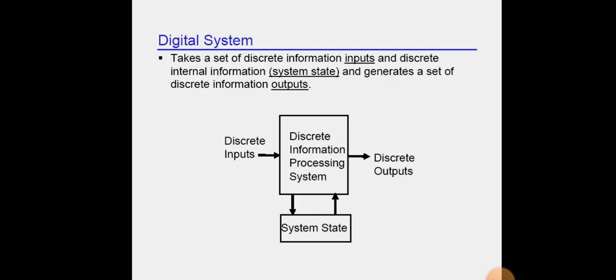Digital systems take a set of discrete information inputs and discrete internal information and generate a set of discrete information outputs. First is discrete inputs, second is discrete information processing system, third is discrete outputs. System states is up and down.